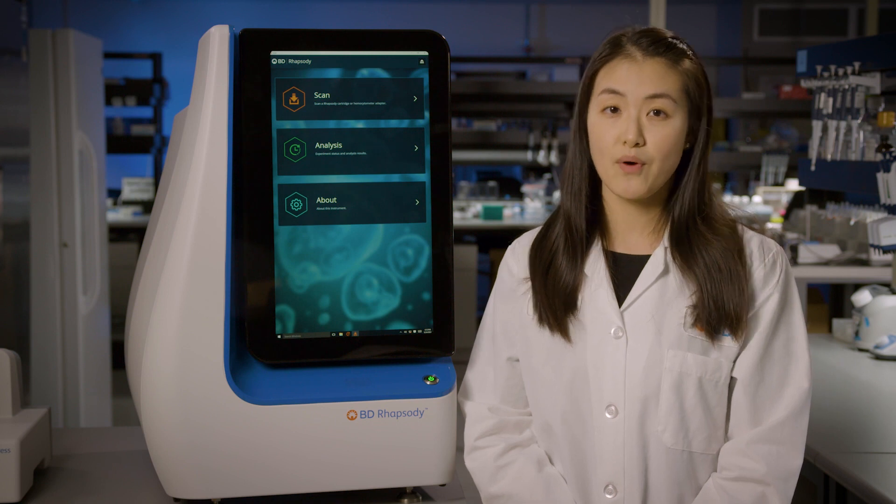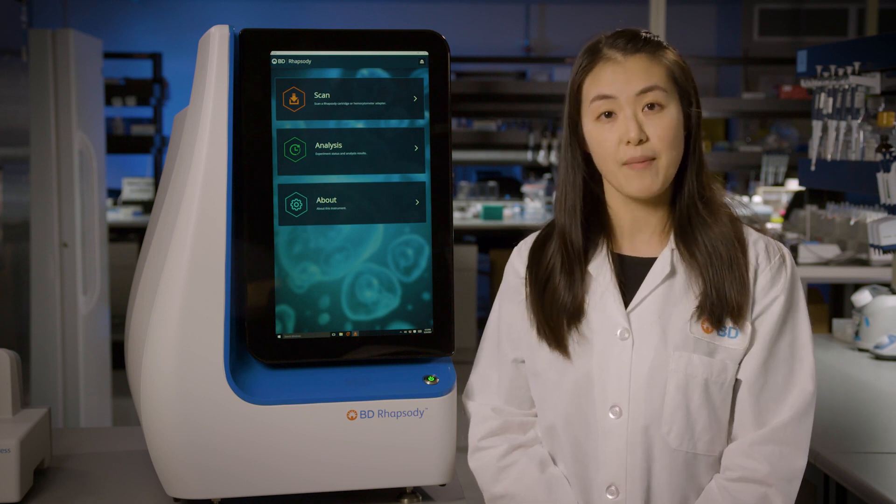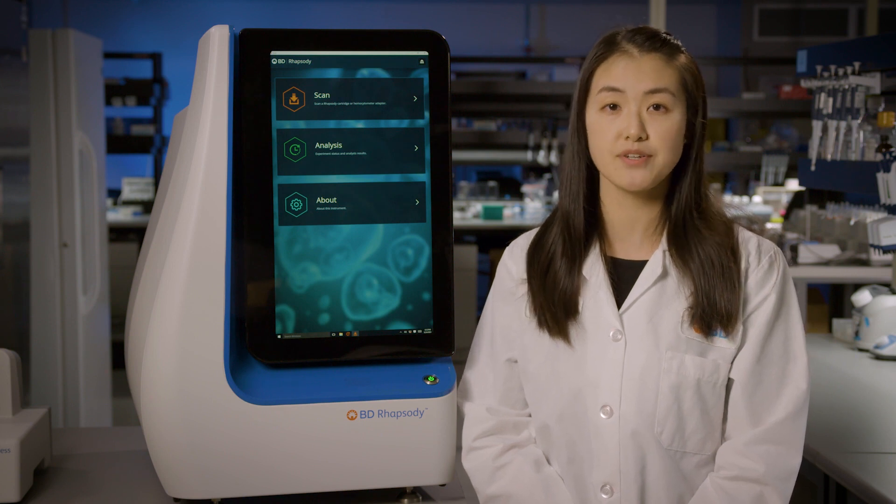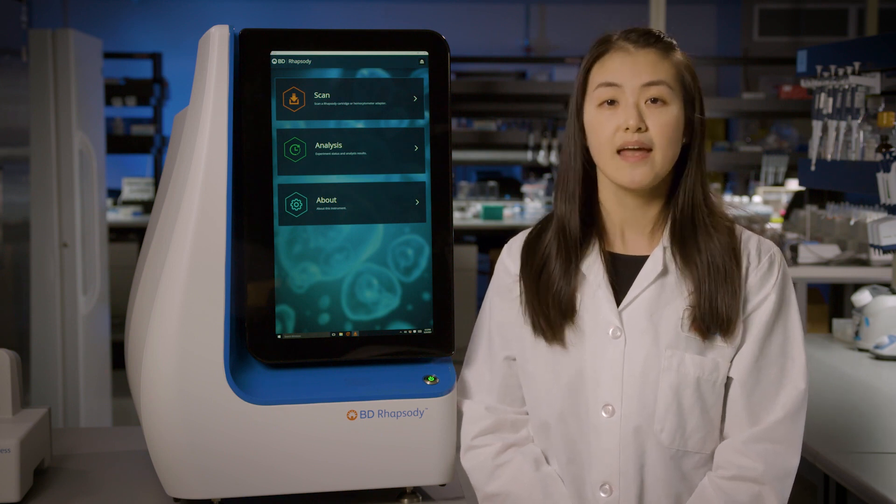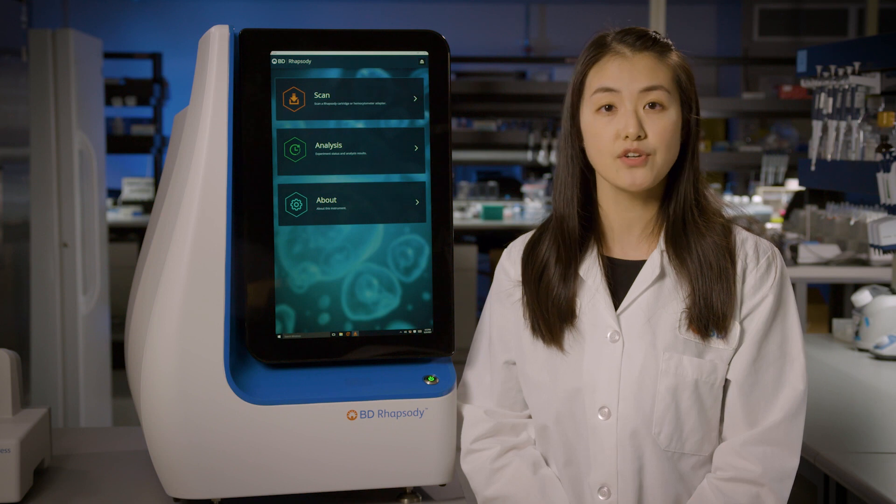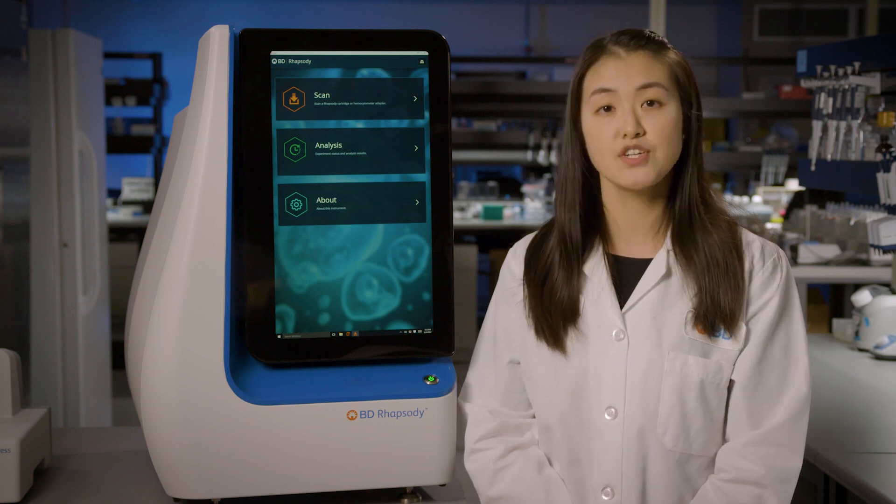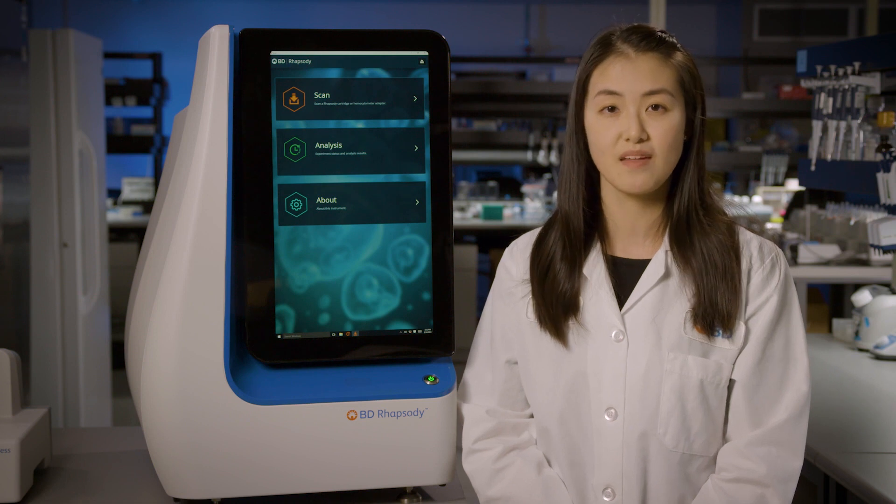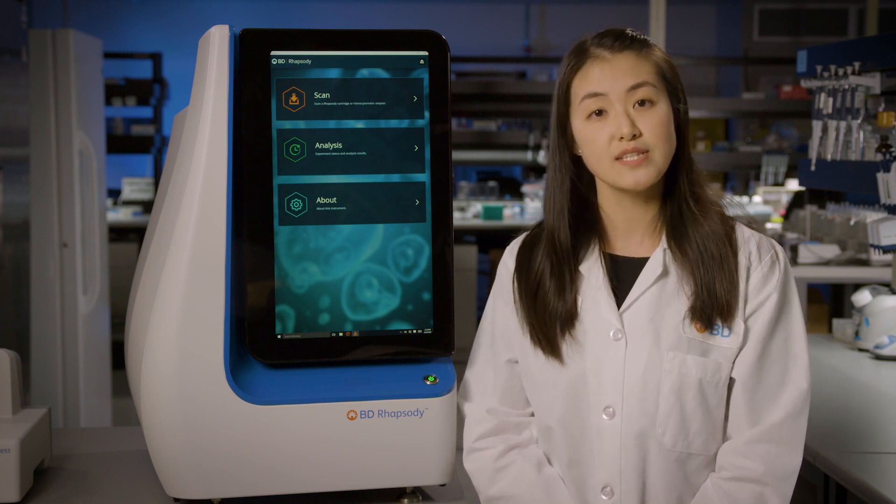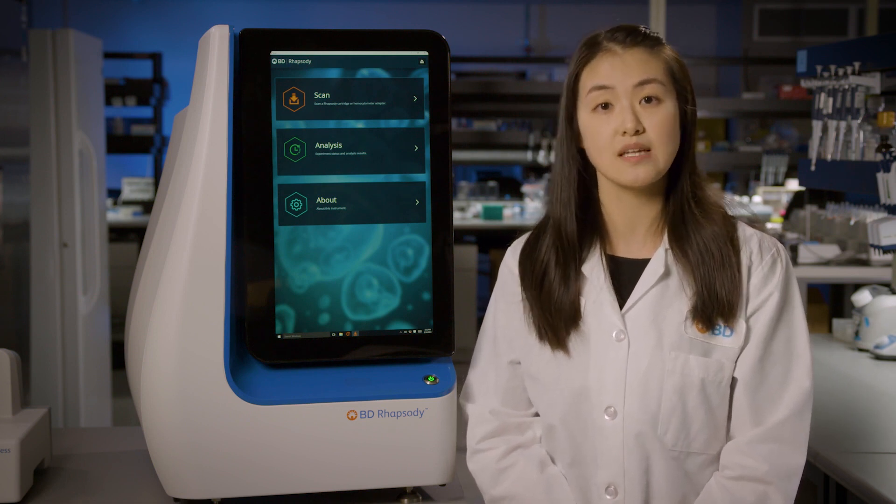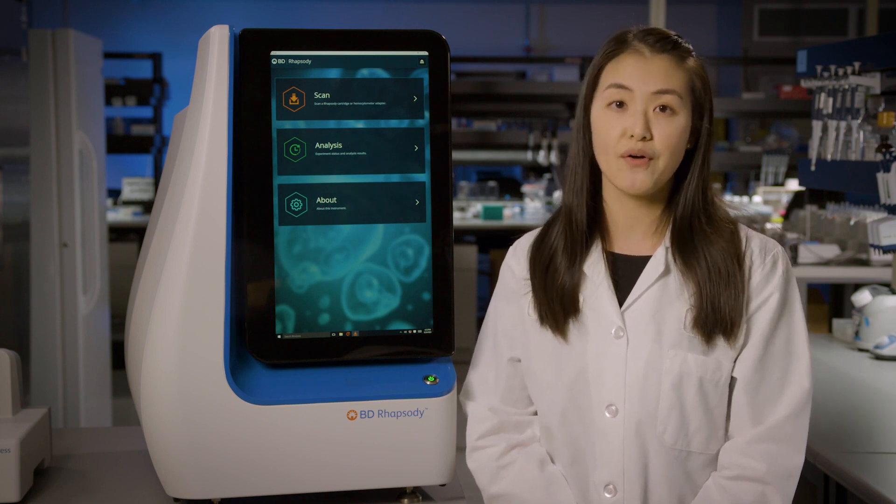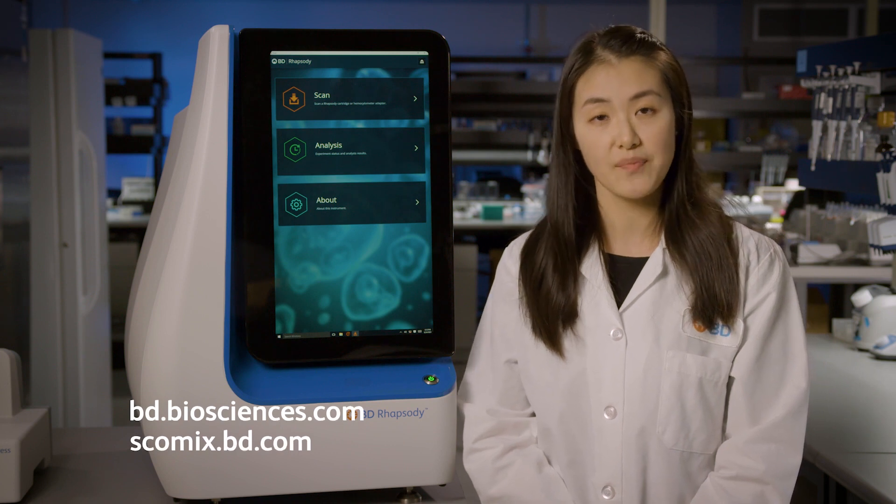The BD-Rhapsody scanner reports quality metrics in real-time at each step of your single-cell assay from initial cells captured to bead retrieval. In this video, we will demonstrate how to use the BD-Rhapsody scanner to check the quality of your single-cell multiomics experiments. For detailed steps of counting and capturing single cells using the BD-Rhapsody Express single-cell analysis system, check out our tutorial at www.bdbiosciences.com or www.scalmix.bd.com.